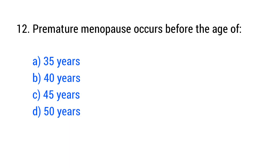Question number 12. Premature menopause occurs before the age of. The right answer is option B, 40 years.